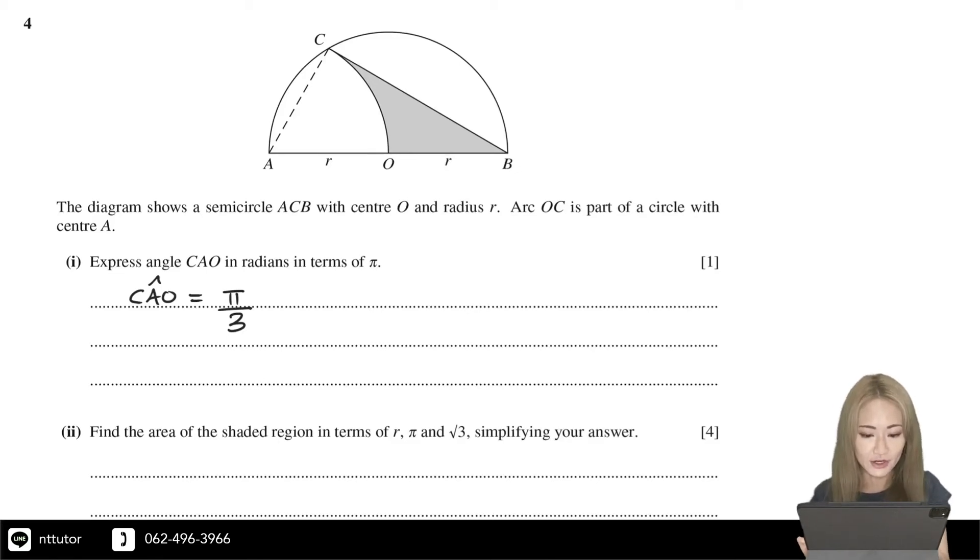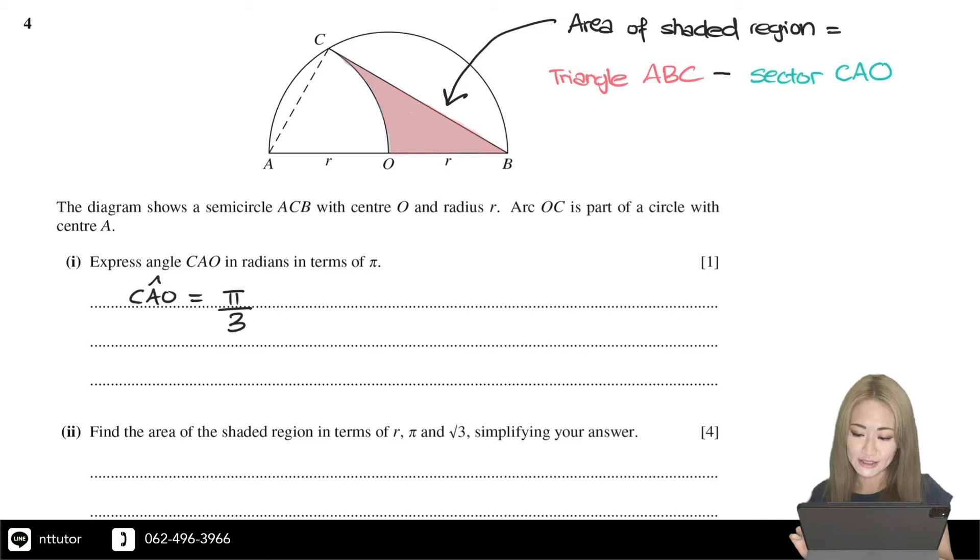So if we want to find the area of the shaded region, the area of the shaded region would equal the area of triangle ABC minus the area of the sector CAO. If you take away the sector CAO, you get the shaded bit.